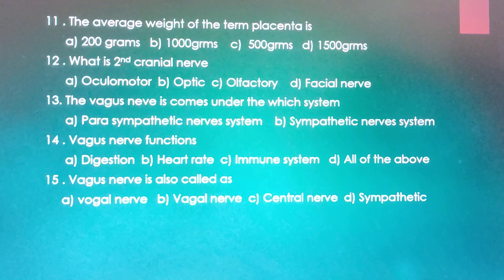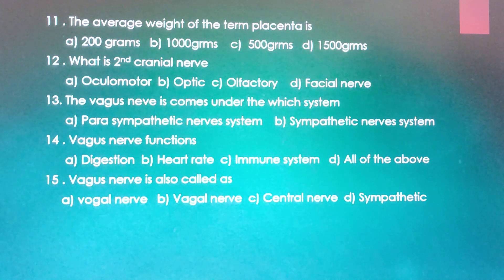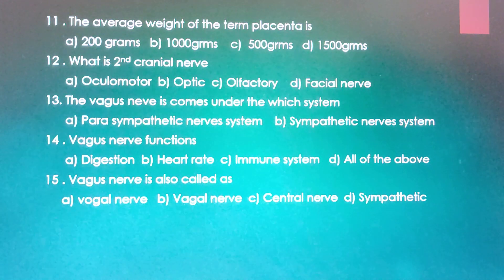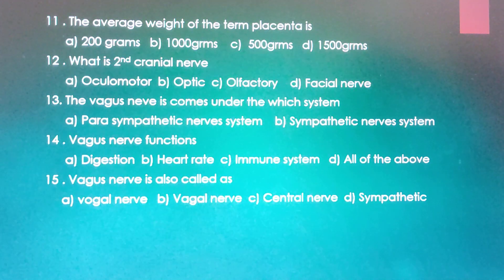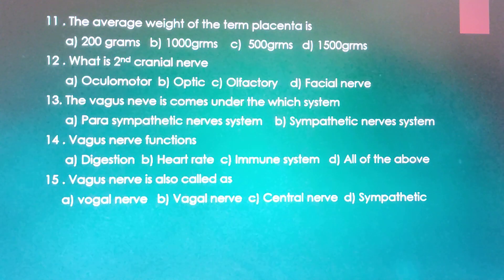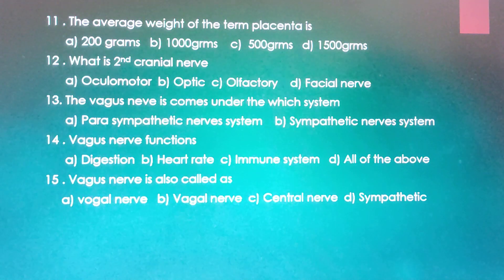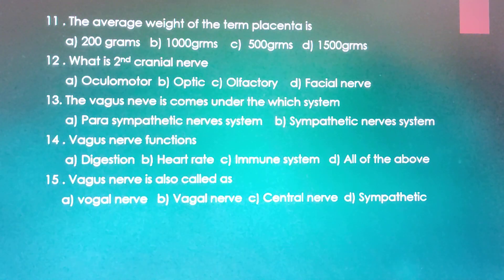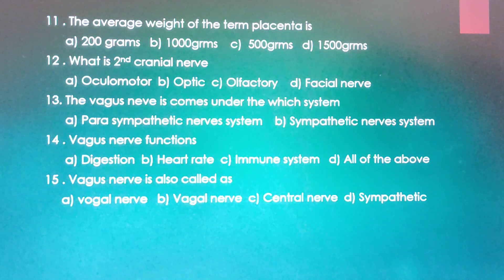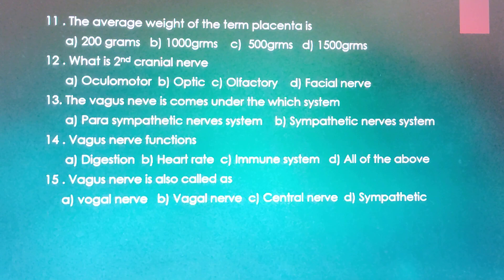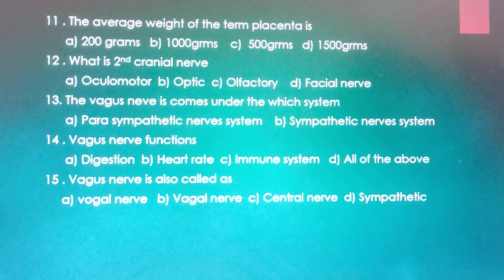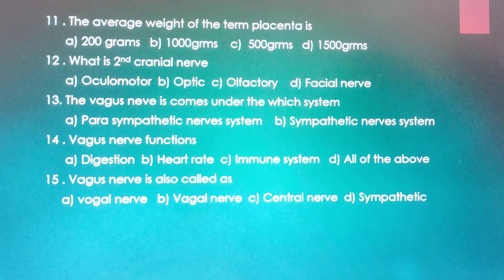The vagus nerve comes under which system? Parasympathetic nerve system or sympathetic nerve system. The correct answer is parasympathetic nerve system.